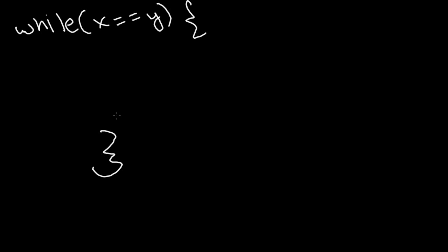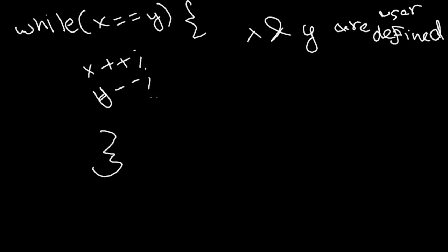So as long as x is equal to y, it's gonna perform the body of the loop. And let's say x and y are user-defined variables. So while x is equal to y, and let's say all we do is x++, y--. So this looks a bit tricky, but trust me, it's not.